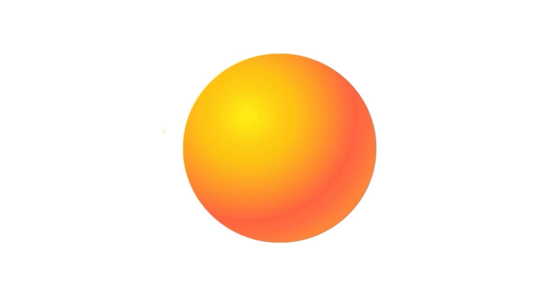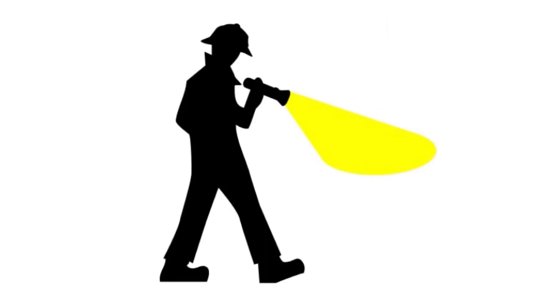For this video, we have replaced the electron with a yellow ball, the spin-up orientation of the electron with an apple, and the spin-down orientation with an orange. The horizontal arrow is used to represent angular momentum. The flashlight has been used to represent a measuring device, while the rays of light represent the act of measurement.